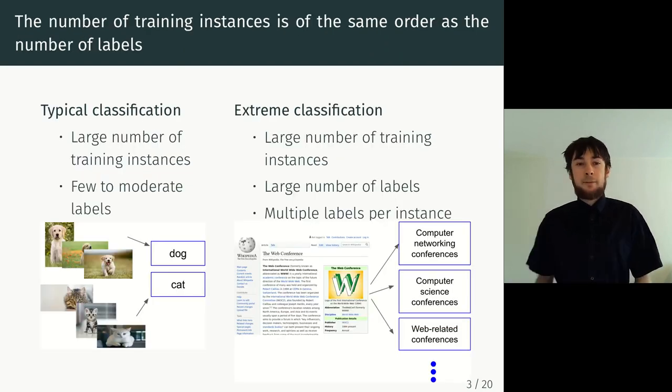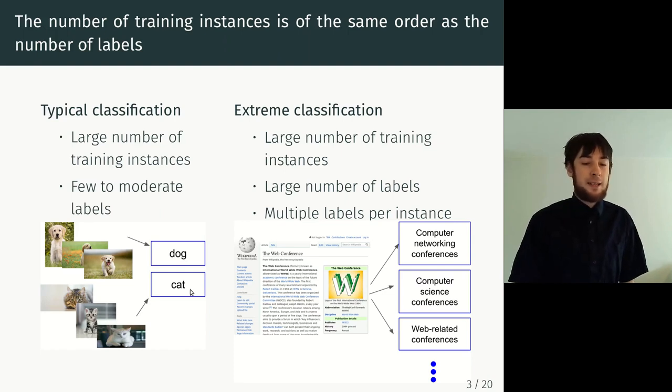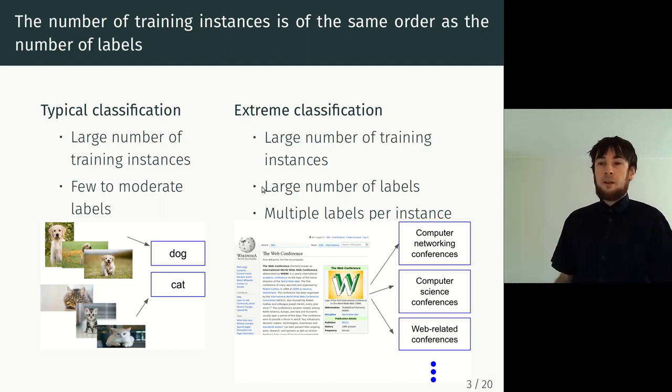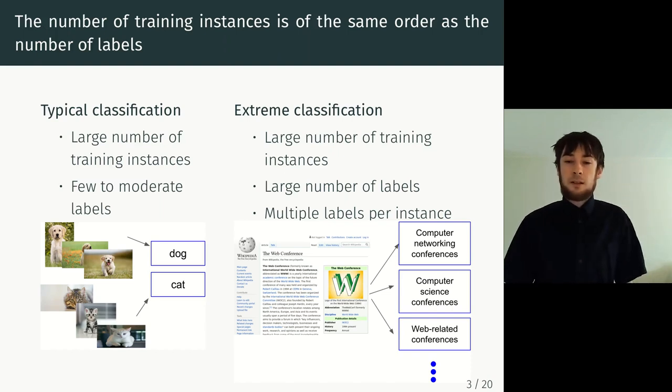This is different from a typical modern machine learning setup where you have a large number of training instances, for example these images, and map them to just a few or maybe moderately many labels. In this case, dogs and cats. Whereas in the examples we've seen here, you have a large number of labels. Actually, the order of magnitude of the number of labels and training instances is comparable, and multiple labels per instance. If you look at the Wikipedia article of the web conference, it has labels such as computer networking conferences, so very specific labels. And this leads to some additional challenges in training.